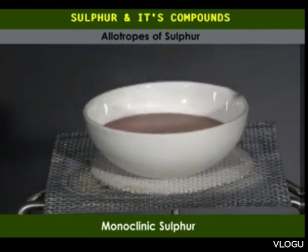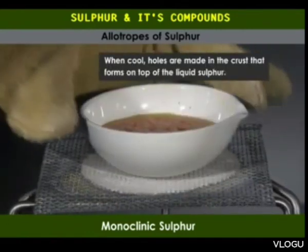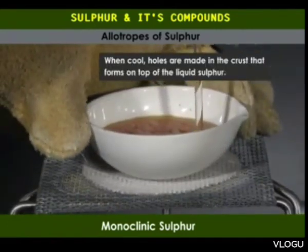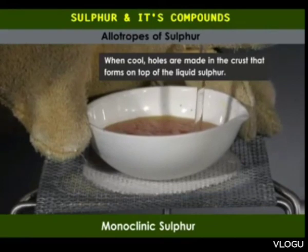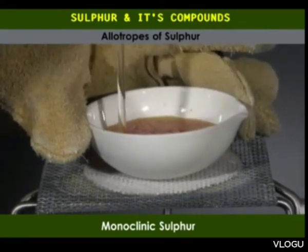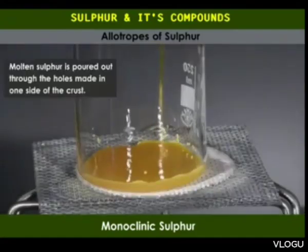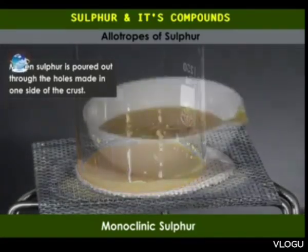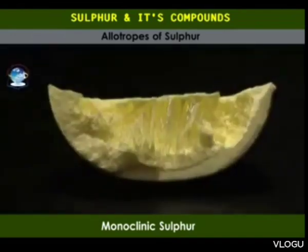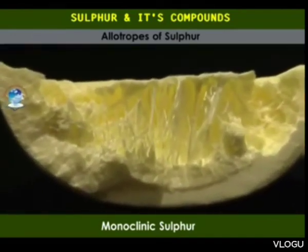The sulfur is melted carefully and then allowed to cool. When cool, holes are made in the crust which forms on top of the liquid sulfur. Once the solid crystals form, the molten liquid inside is poured out through these holes. When the cool solid is broken open, monoclinic crystals can clearly be seen.